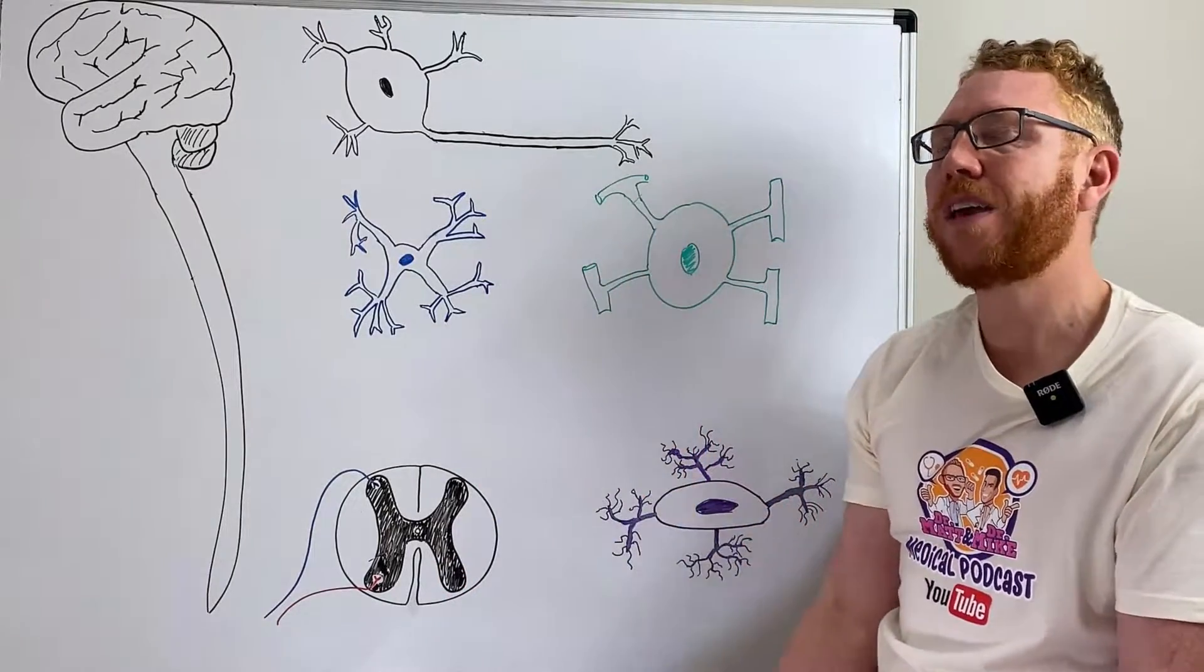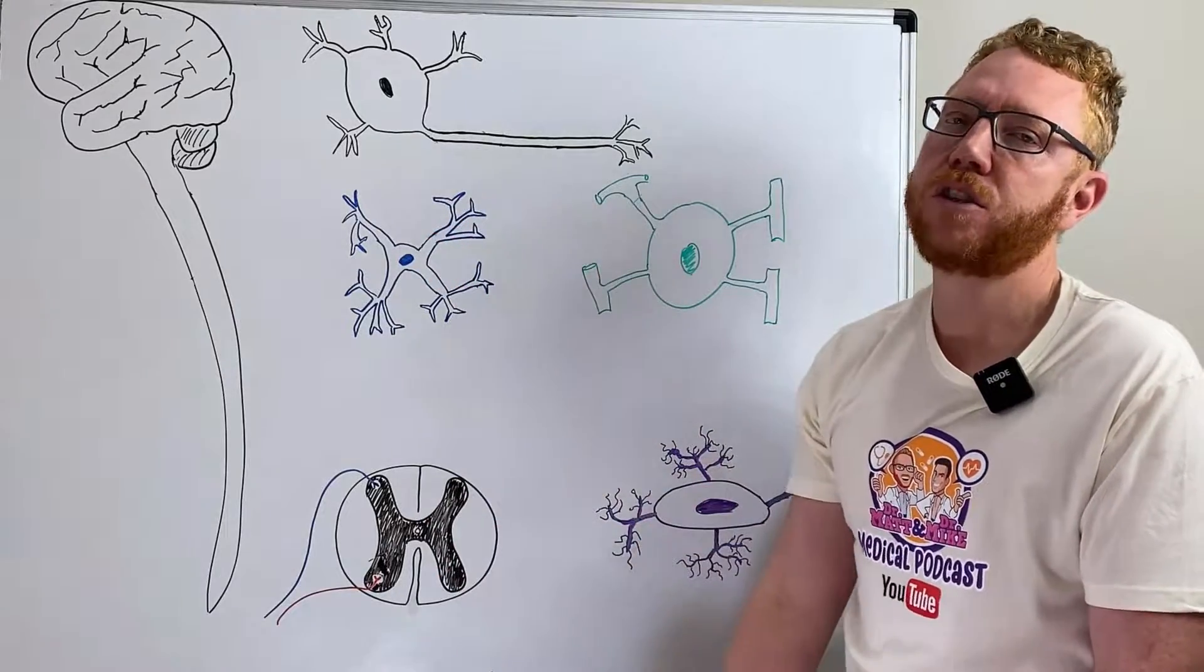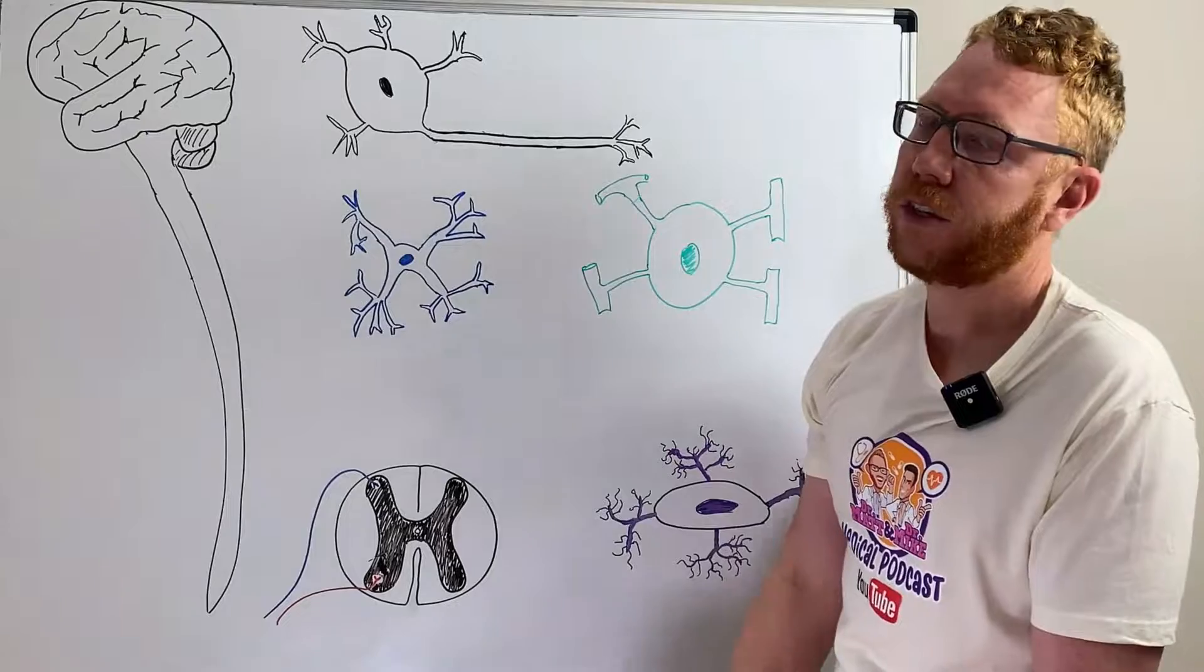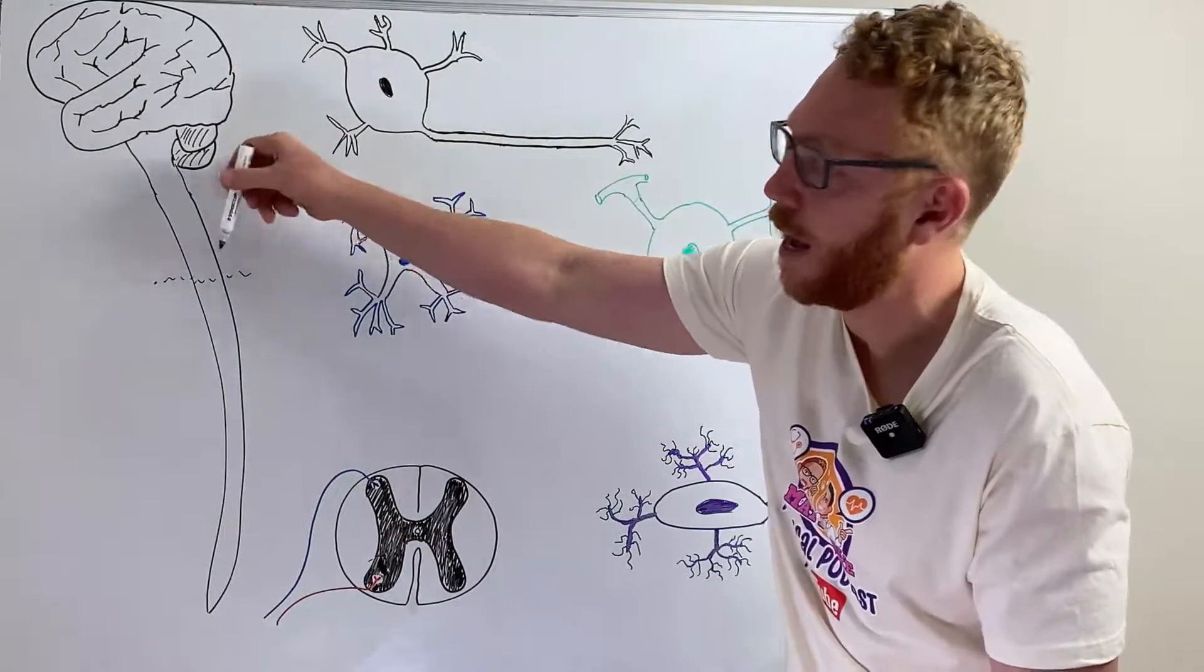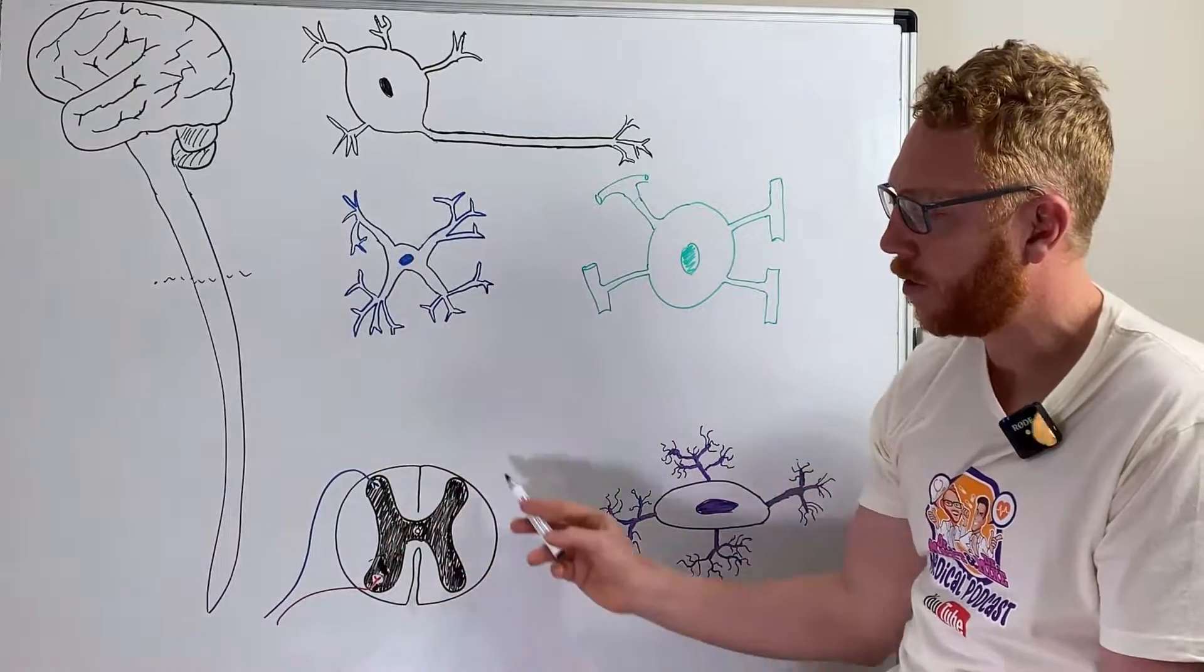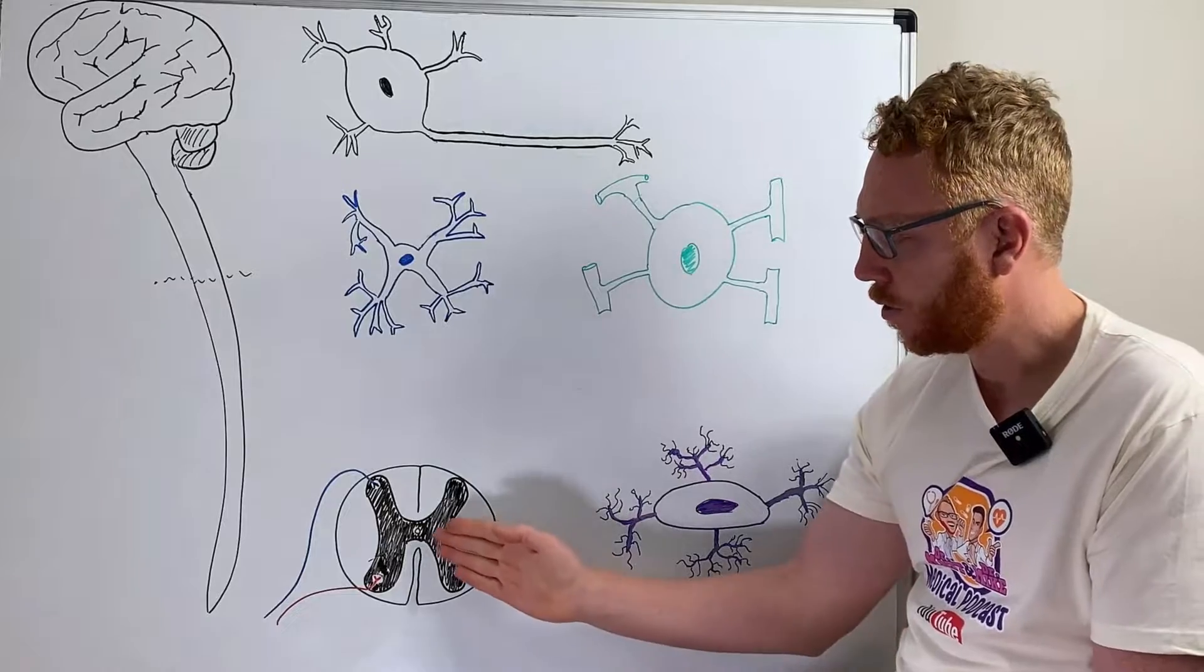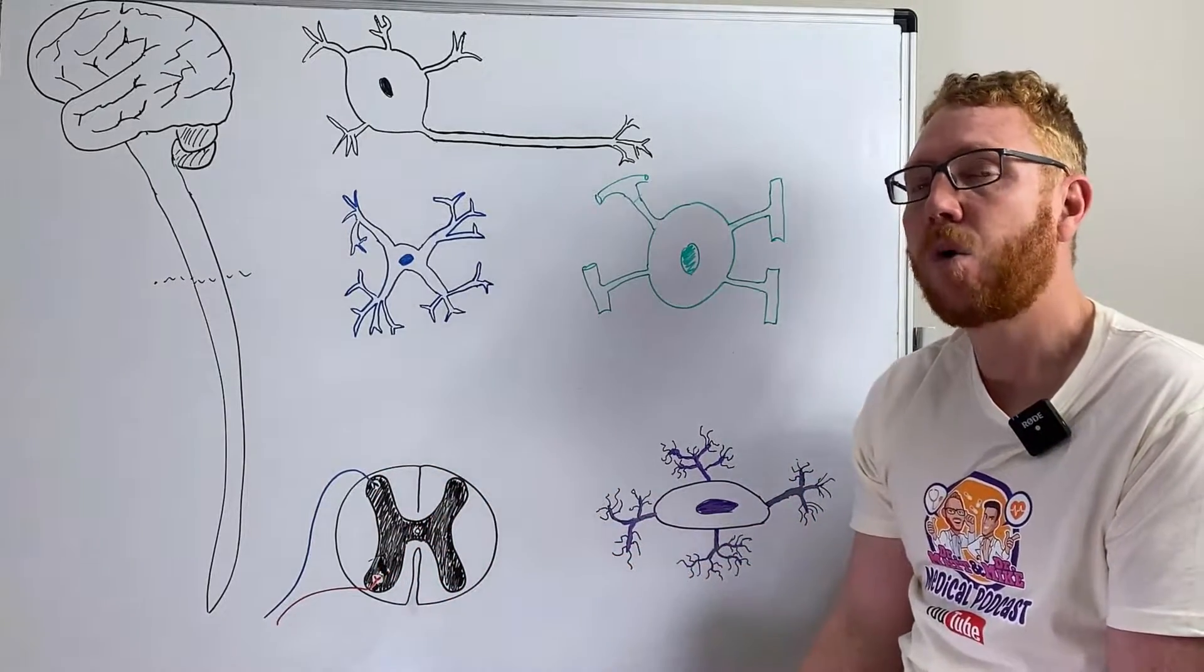In this lecture, we're going to look at how these cells partake in the function of the spinal cord. Let's start by looking at a cross-section in the spinal cord. If we made a cut through the spinal cord and looked down on it, what we would see is an image like this. You can see straight away that there's two different colors: the grey matter and the white matter.